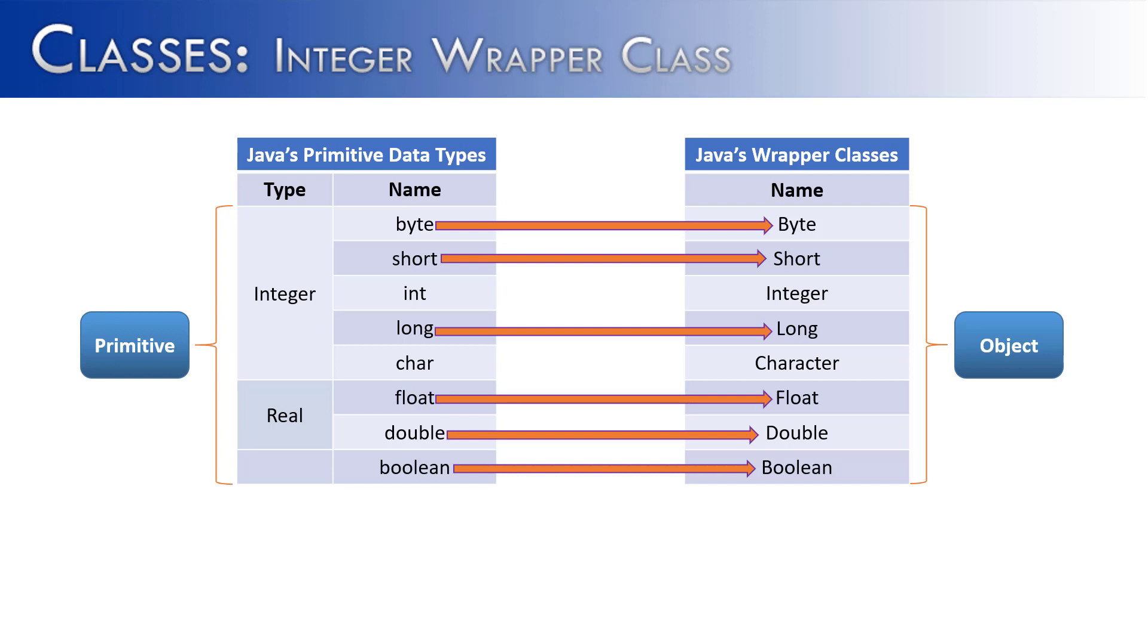There are two exceptions to this: int and char. Int becomes Integer with a capital I, and char becomes Character with a capital C.